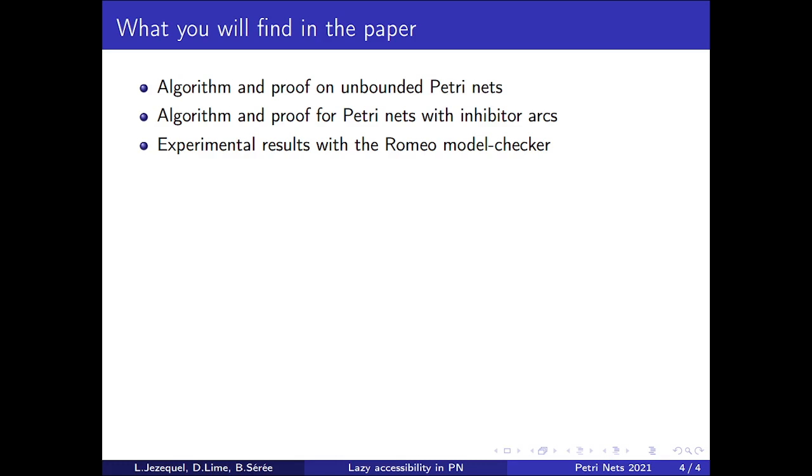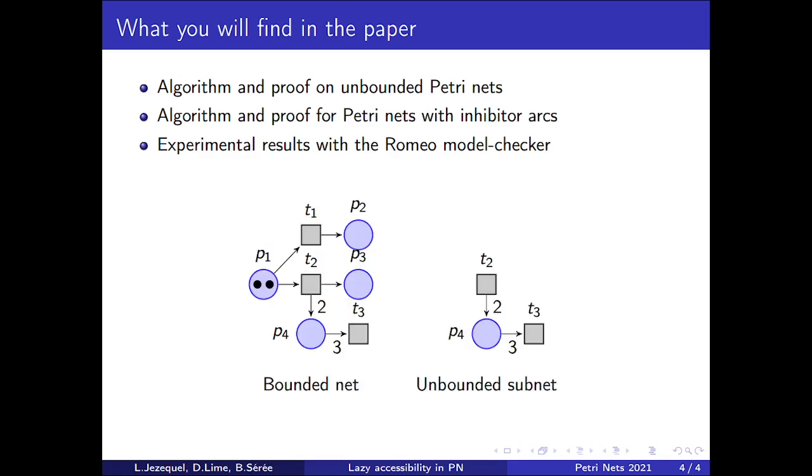Moreover, we show how a similar algorithm can be used for reachability analysis in bounded Petri Net with inhibitor arcs. Constructing subnets with inhibitor arcs is not very different from what we have shown in this presentation. However, concluding reachability is more involved because subnets that are not P-complete can be unbounded, even for bounded nets.